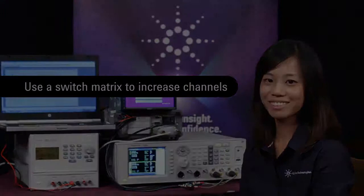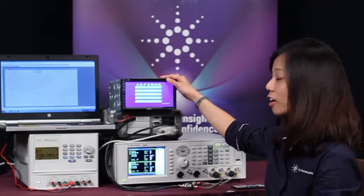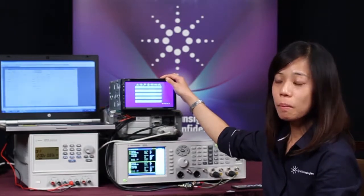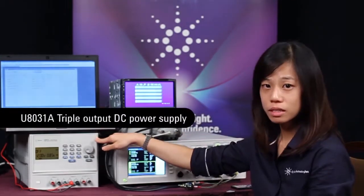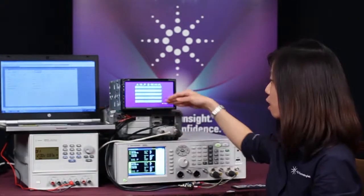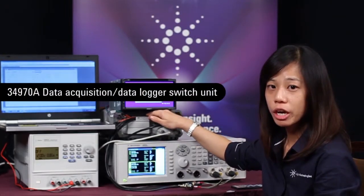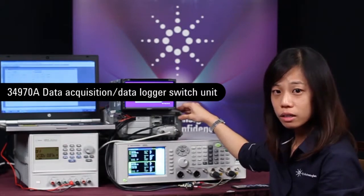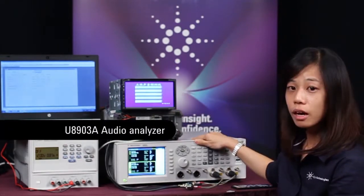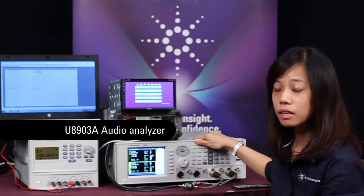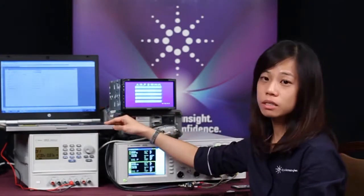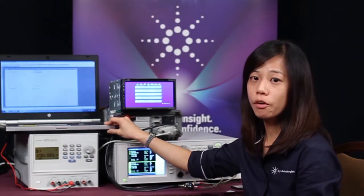In this setup, we will use the car radio as the device under test powered by a 12V DC power supply. We have a switch matrix here that is used to expand the number of channels and this is captured by our data logger. And then the data will be analyzed by our U8903A Audio Analyzer, in which we have a PC with an automated V program that is used to capture the results.